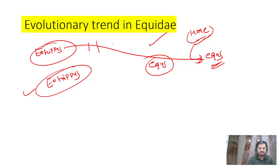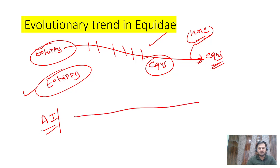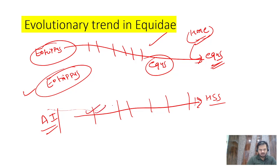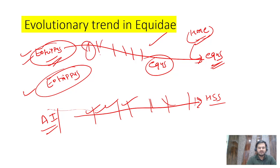Just as in human evolution we started from arboreal insectivores - or Propliopithecus - and journeyed through Dryopithecus, Australopithecus, Homo habilis, Homo erectus, and others to Homo sapiens sapiens, we will take a similar approach for horses. We will start from Eohippus, cover a few others, and remember around 10 to 15 names - enough to score at least 90 percent marks on this topic.